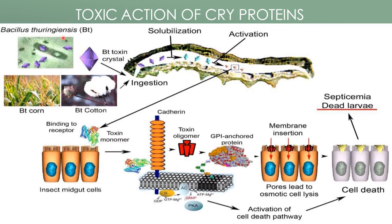In this picture, the cry gene from Bacillus thuringiensis is transformed into plants like corn and cotton, which are then called Bt corn or Bt cotton. These plants start to produce Bt toxin crystals in their stem and leaf. Once the bollworm starts to infect these plants, the Bt toxin crystals are ingested by the bollworm.